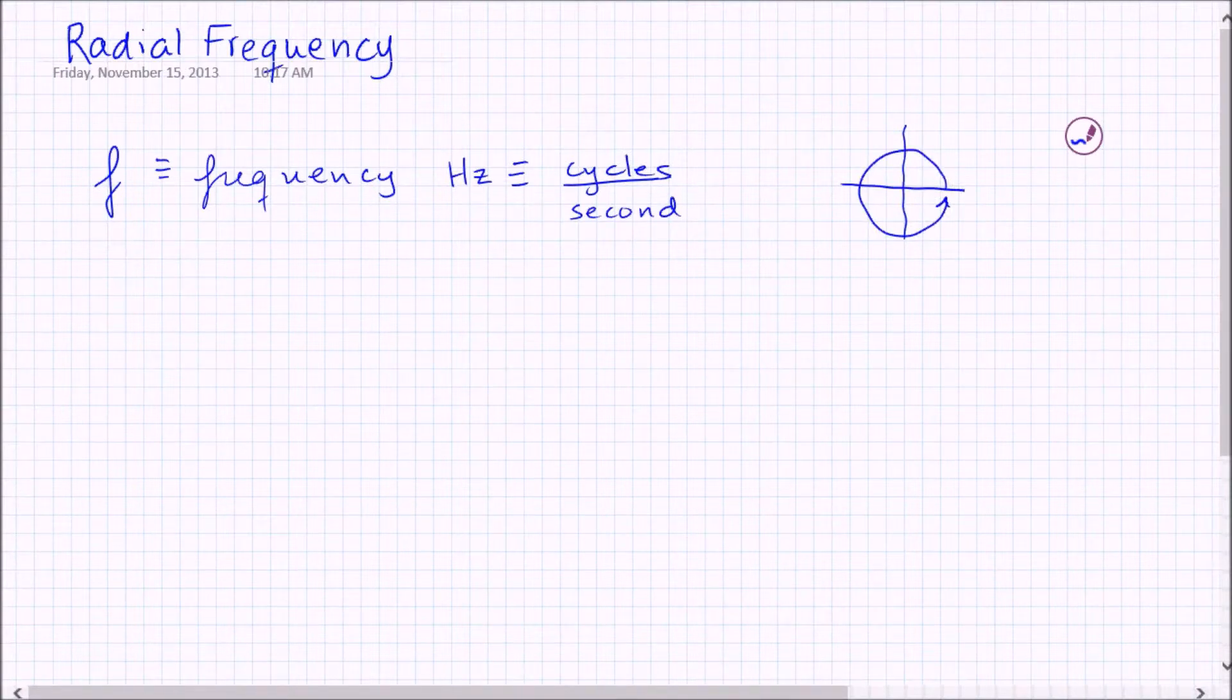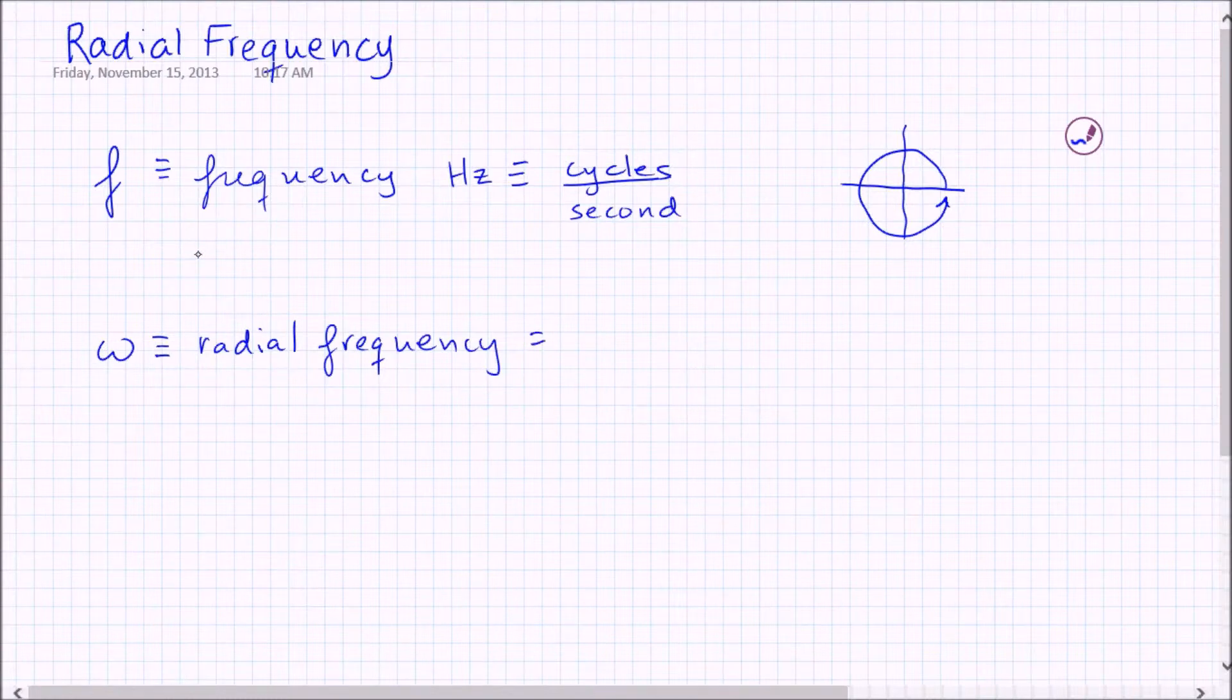And that's actually a very helpful idea for thinking about the next kind of frequency, which is omega. Now omega is called radial frequency, and it's used because in the mathematics it comes out very naturally because very often this frequency F is associated with a two pi in front of it. And that turns out to be equal to the radial frequency, two pi times F.